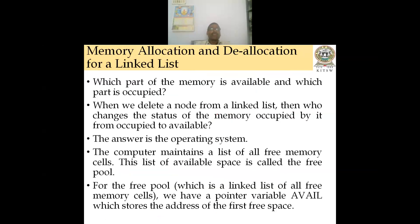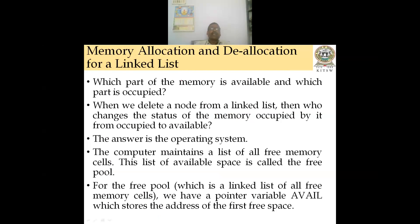How do we know which part of memory is available and which is occupied? When a node is deleted from a linked list, its memory status changes from occupied to available. The operating system maintains a list of all free memory cells, called the free pool. The free pool is a linked list of all free memory cells, and a pointer called 'avail' stores the address of the first free space.